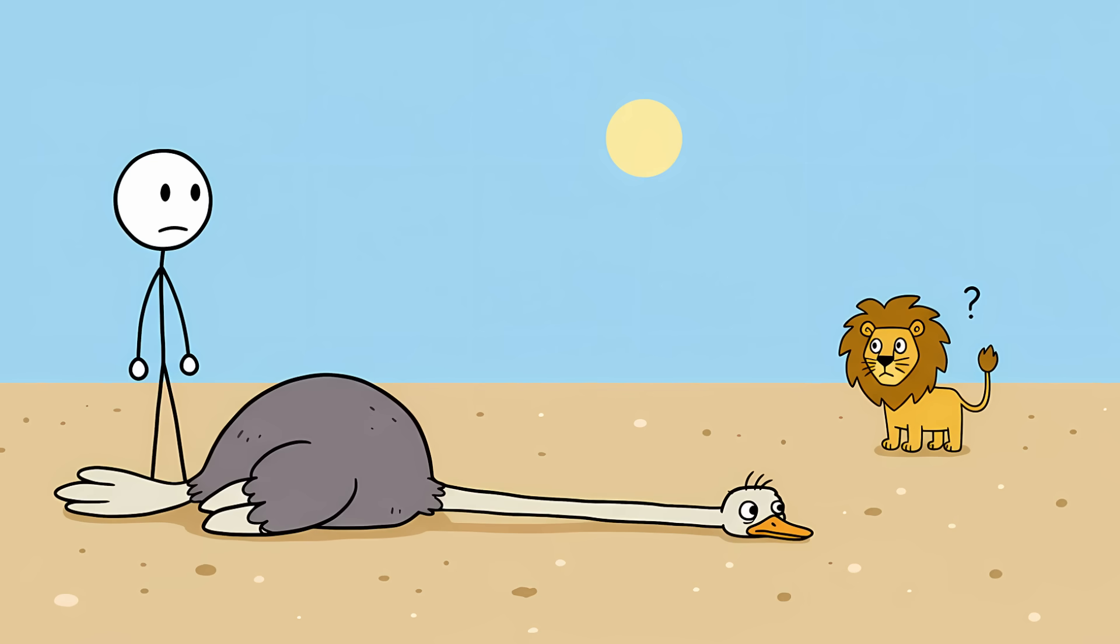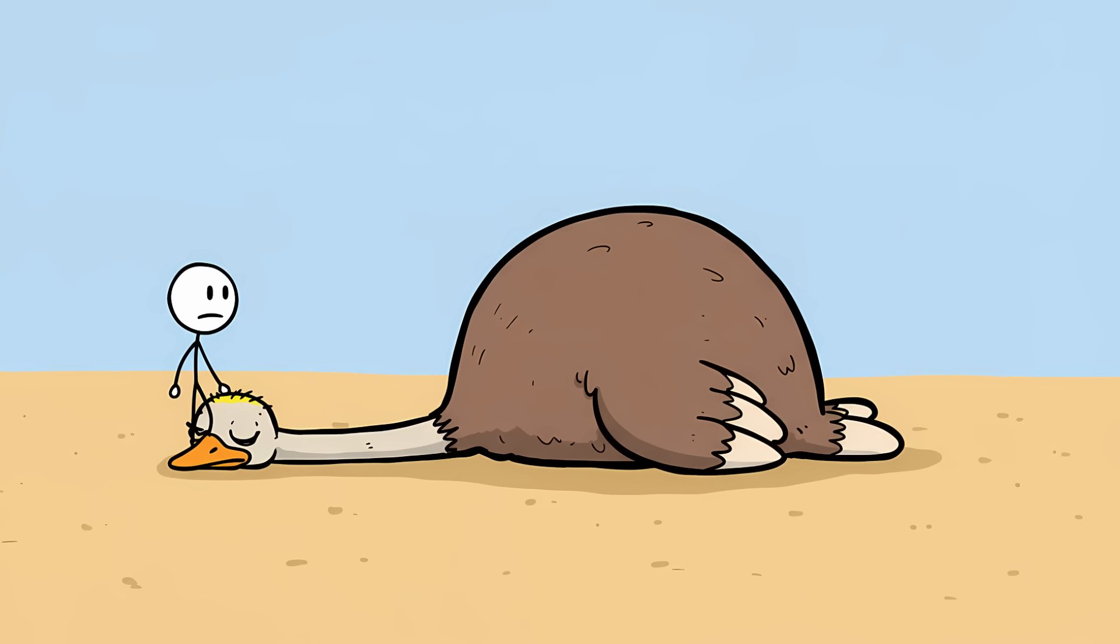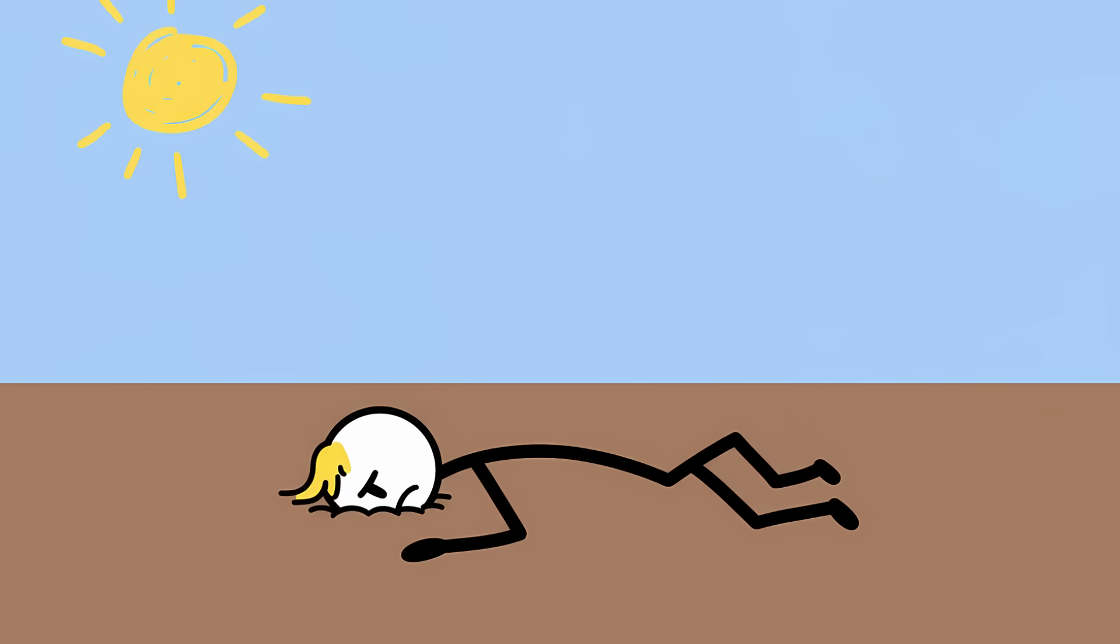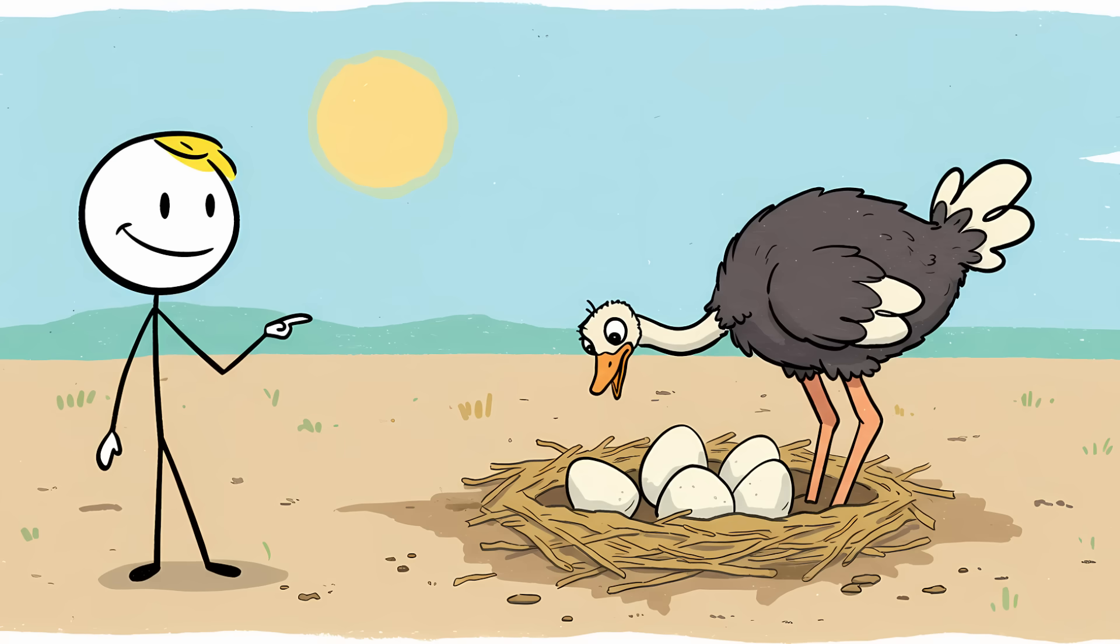Furthermore, when an ostrich feels threatened and can't run, its first instinct is to lie down and press its long neck and head flat against the ground. Since their head and neck are a sandy color, it blends in with the terrain, making it look like the body is just a weird, feathery rock. It's a camouflage attempt, not a self-induced dirt nap.